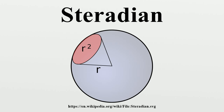A steradian is also equal to the spherical area of a polygon having an angle excess of 1 radian, to ¼π of a complete sphere, or to approximately 3282.81 square degrees.